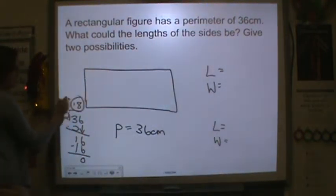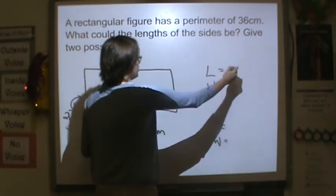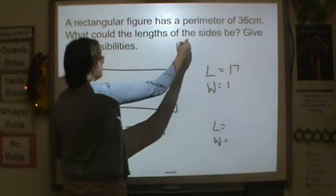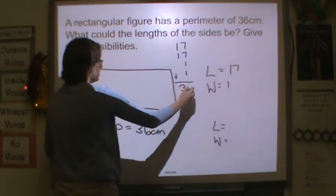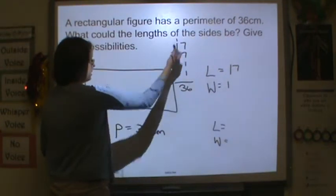So I have 18. So my 2 sides need to add up to 18. So my length could be 17, and my width could be 1. 17 plus 17 plus 1 plus 1, if you added those together, you would get 36. Because 7 and 7 is 14, 15, 16, 36.